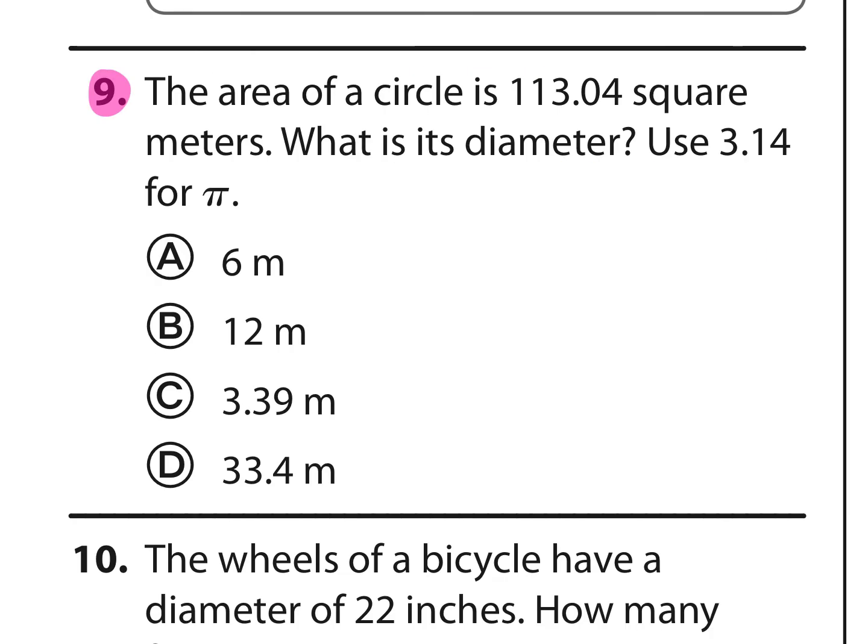Problem number 9, the area of a circle is 113.04 square meters. What's the diameter? It's asking for area. We've only got one formula for area of a circle, and it's A equals π R squared. Let's plug in what we know. The area is 113.04. We know we're going to use 3.14 for π, but we don't know what the radius is, so we'll come back and figure that out once we know the radius.